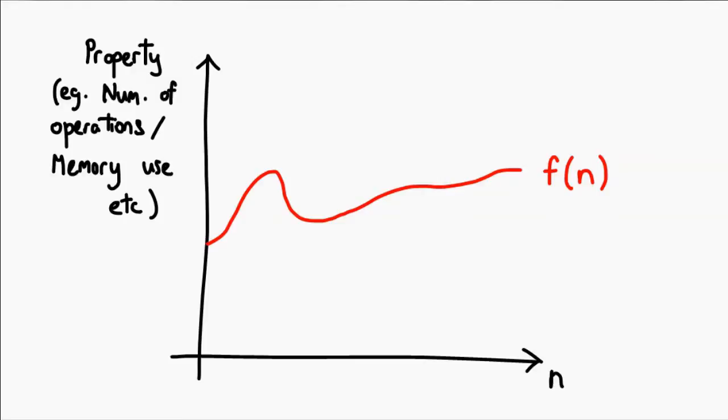Remember how I said big O notation kind of works like a maximum? Well, this definition enforces that. We introduce our function c*g(n), and the whole idea is c*g(n) needs to be larger than f(n) itself. So it needs to be somewhere above it.